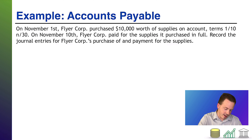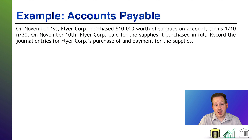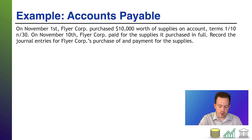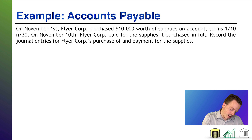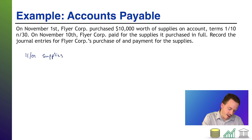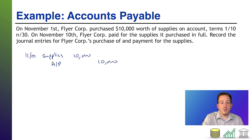Let's look at an example of accounts payable. On November 1st, FlyerCore purchased $10,000 worth of supplies on account, terms 1/10 net 30. On November 10th, which is nine days later, FlyerCore paid for the supplies it purchased in full. We need to record the journal entries for the purchase and payment of supplies. On November 1st, we purchased $10,000 worth of supplies on account, so we debit supplies and credit accounts payable for $10,000 because we owe $10,000. That's what that journal entry says — bought supplies on account.